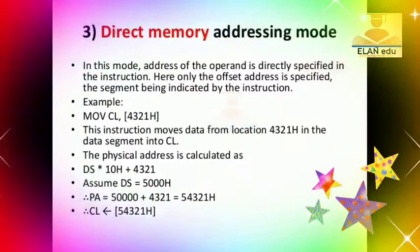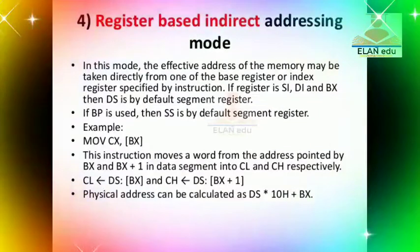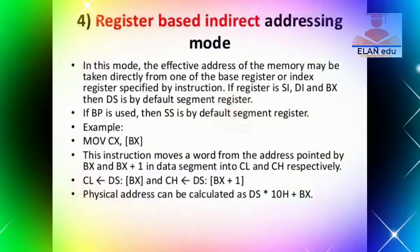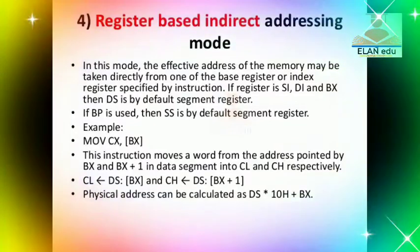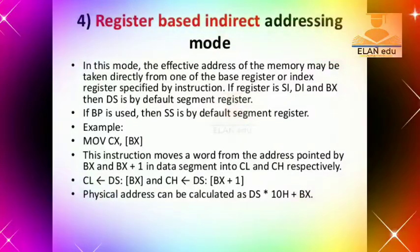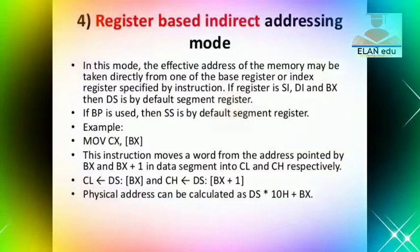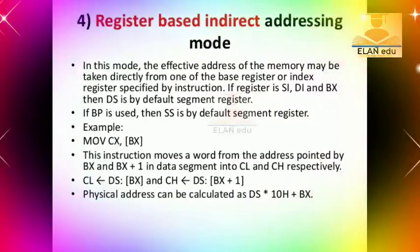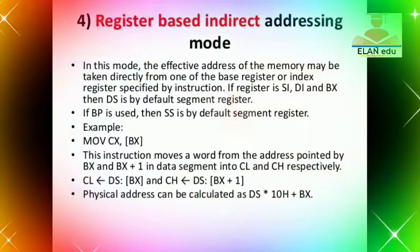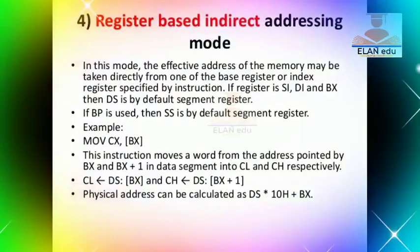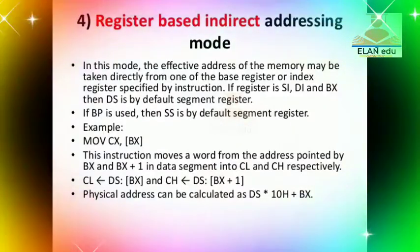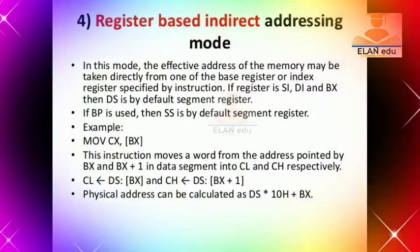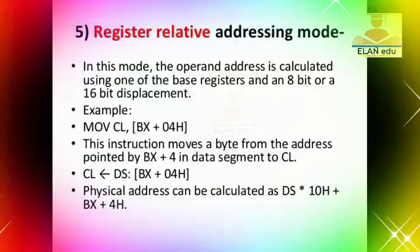Now, we can look at the register-based indirect addressing mode. In this mode, we can add an address to a memory location and add the offset. We can use the base pointer, BX register, source index, and destination index. For example, MOV CX, [BX] is an indirect addressing mode. If the address value is in BX, then that data will be moved into the CX register. This is the register-based indirect addressing mode.